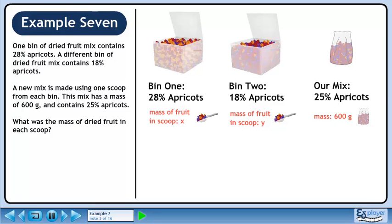Let's call the mass of dried fruit from bin 1 x and the mass of dried fruit from bin 2 y. The mass of our mix is already given to us — it's 600 grams. We can write our first equation: x plus y equals 600, since the combined mass of the scoops must be 600 grams.